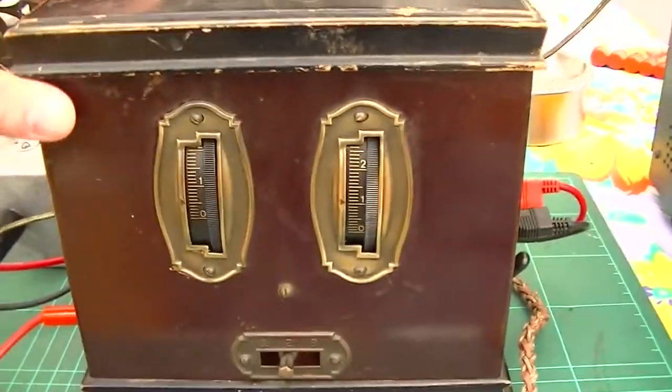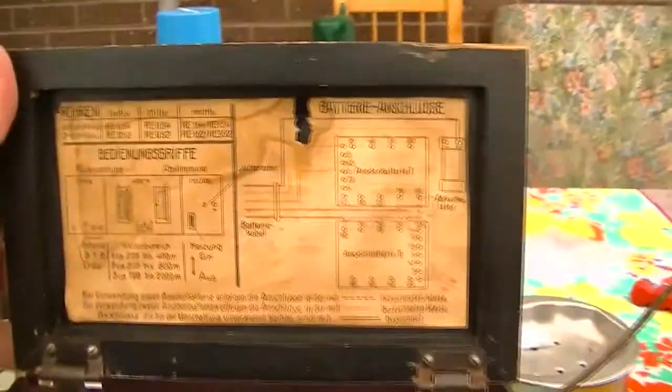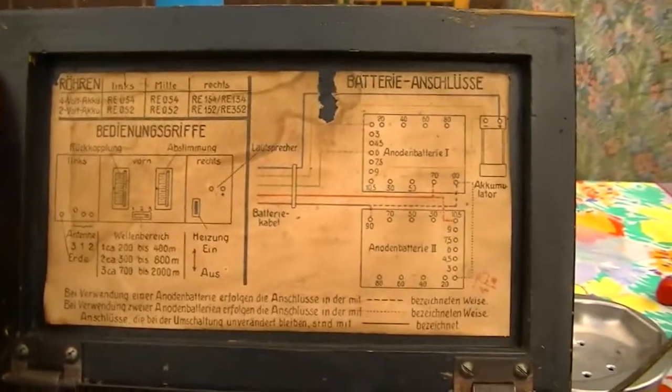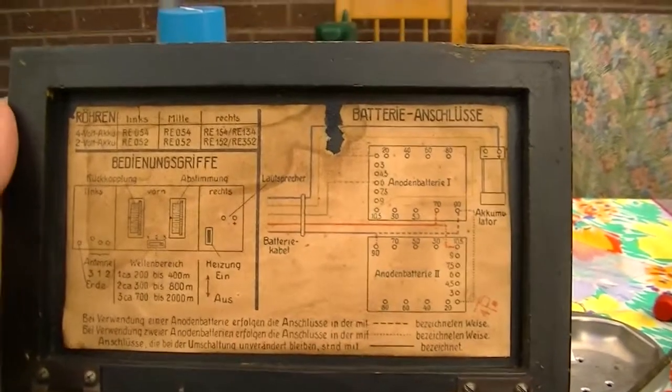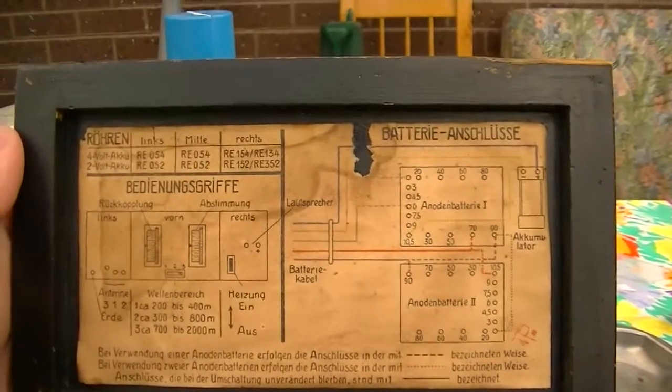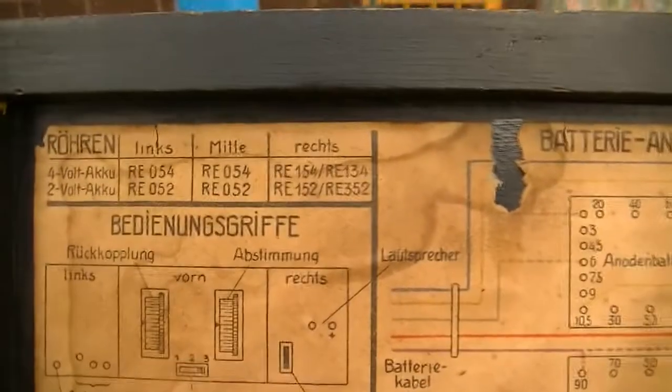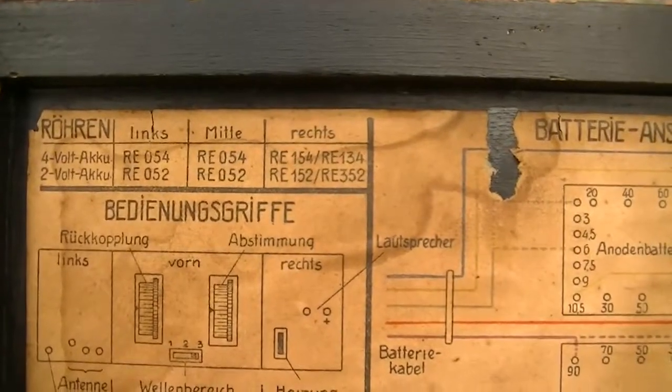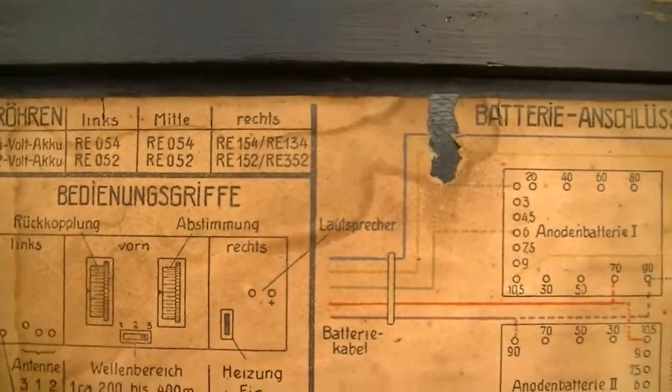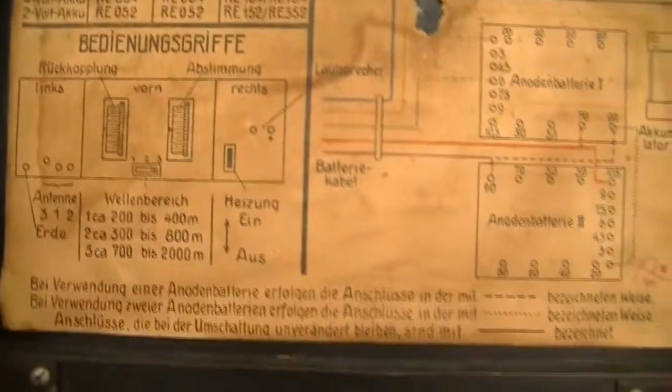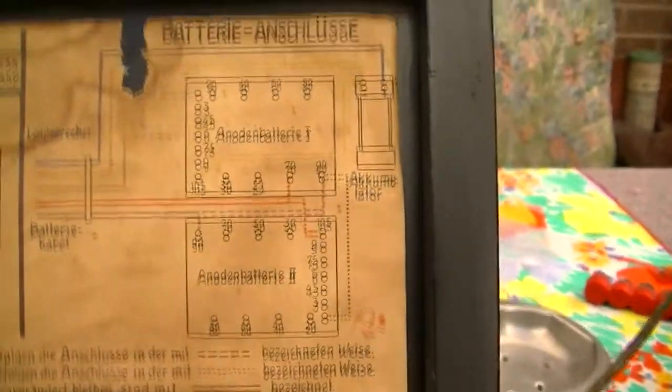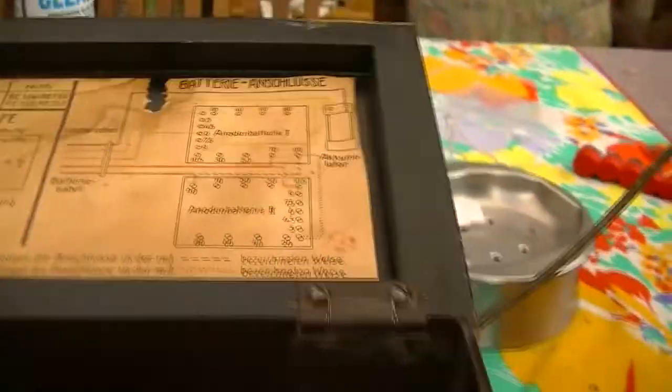As I said, it's an Arcolette 3. Open up the lid. It's got a rather yellowed little insert that tells you what valves to put in there, either 2 volt filament valves or 4 volt. Now, some of the valves I've got in here actually don't match what's on there. It's all in German, by the way, if you want to have a look. It's a bit worn out. I have a bunch of old Telefunken valves.